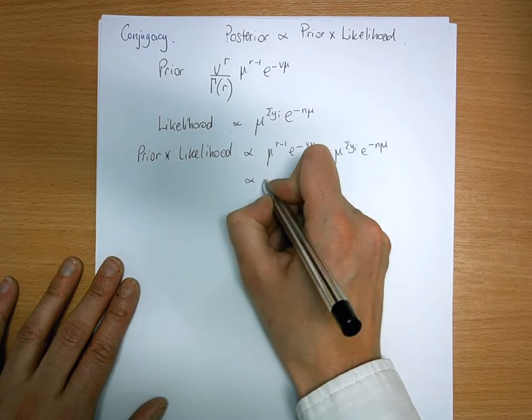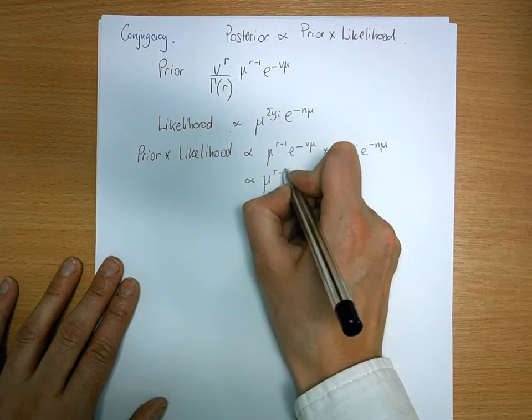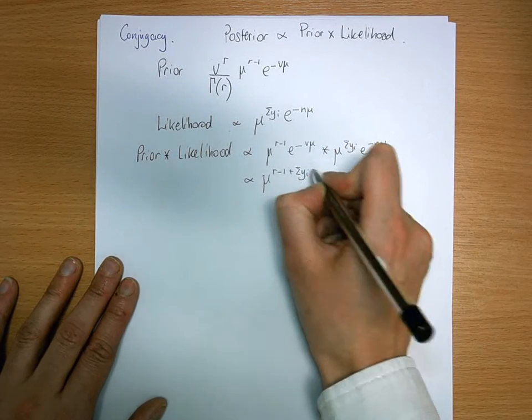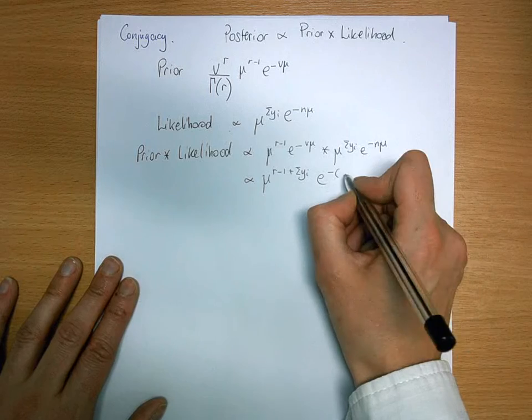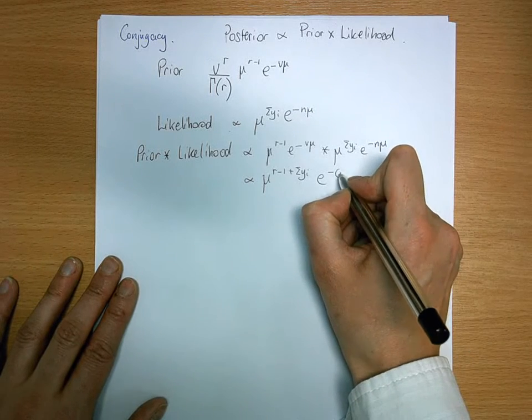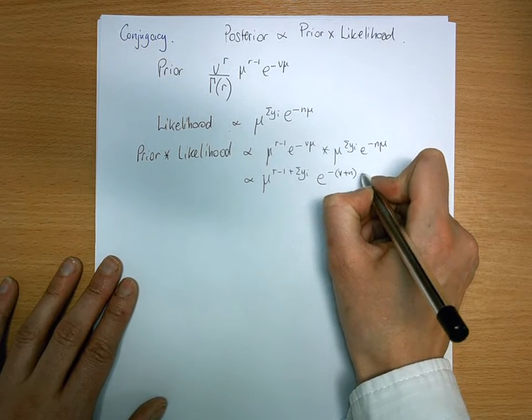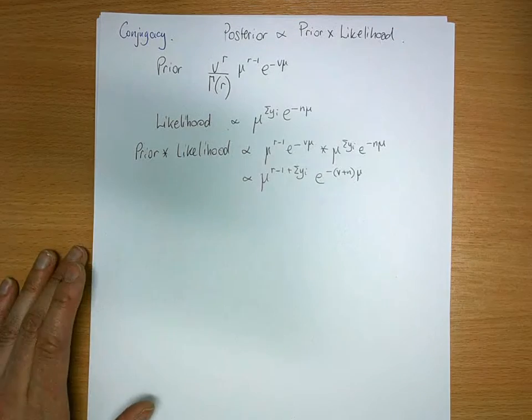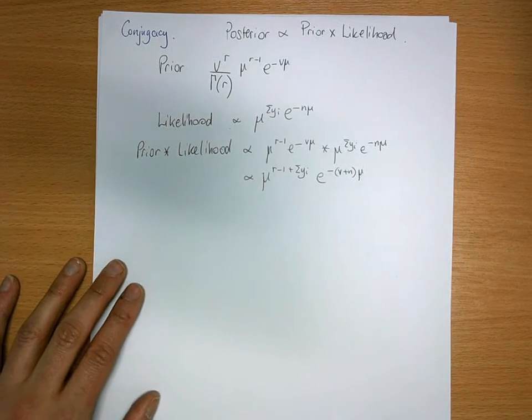Bit of gathering around: mu to the r minus 1 plus sum of yi, e to the minus v plus n mu. There we go.